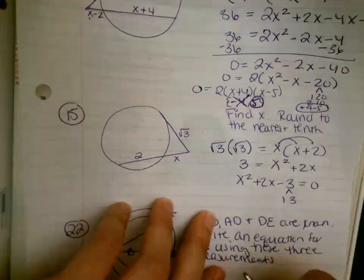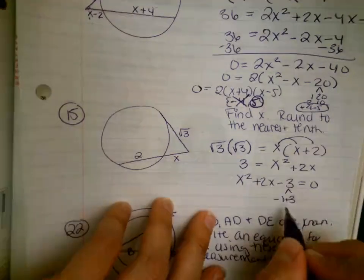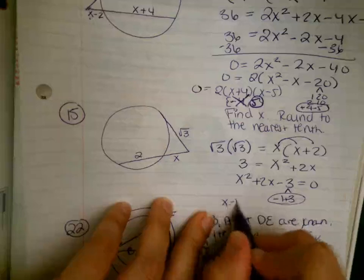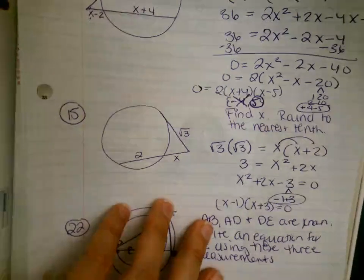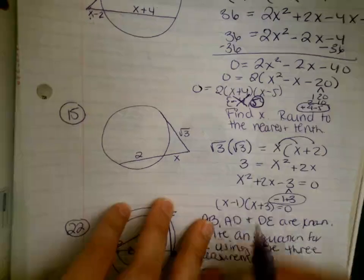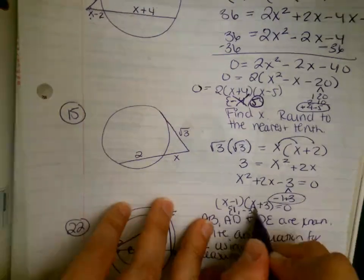1 times 3 is 3. What multiplies to negative 3 and adds to positive 2? That would be positive 3 and negative 1. So you have x minus 1 times x plus 3 equals 0. Those are the factors. Using the zero product property, we get the solutions as 1 and negative 3.